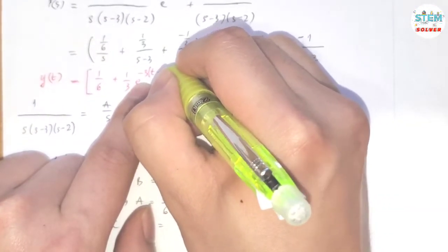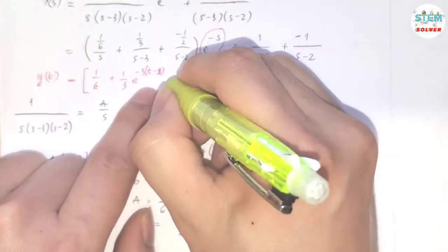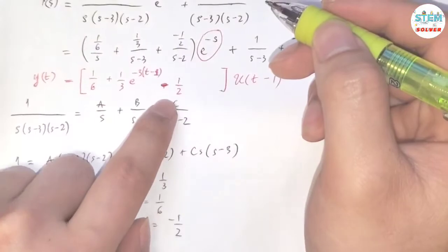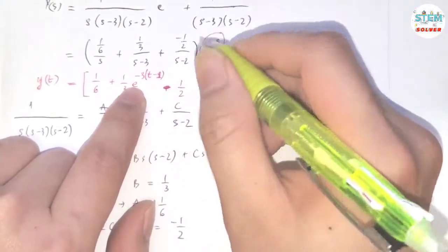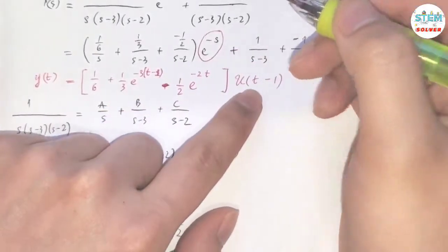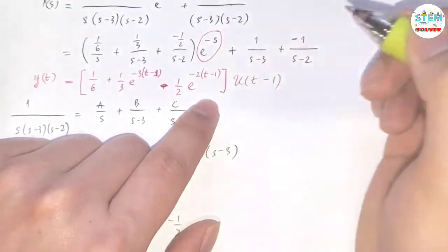Same for this one. No, actually negative sign, negative 1/2, and L inverse of this is similar, e^(2t), and again, t has to match up, so we need to have t minus 1.